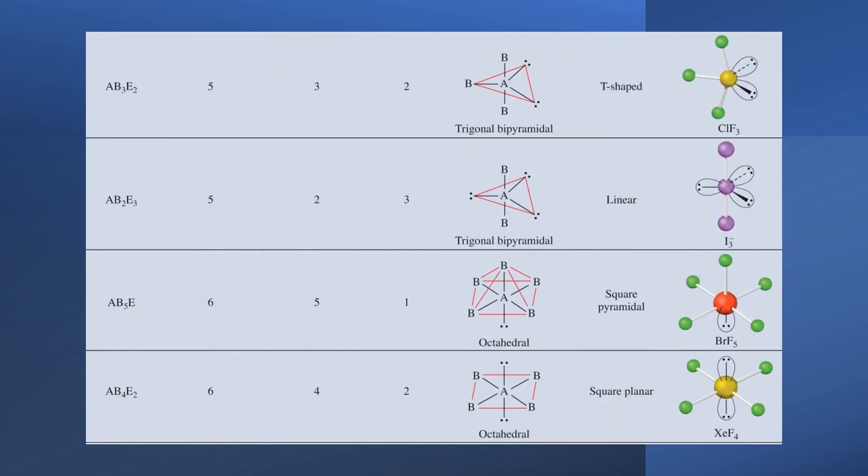If we have five things around our molecule in a combination of lone pairs and bonding pairs, something like CLF3, we will have trigonal bipyramidal geometry. This will be, in terms of its molecular geometry, T-shaped. See the T here? Okay.